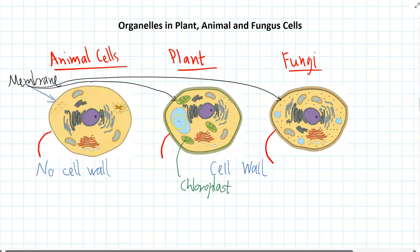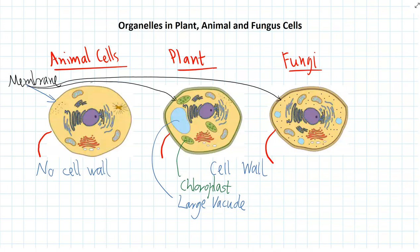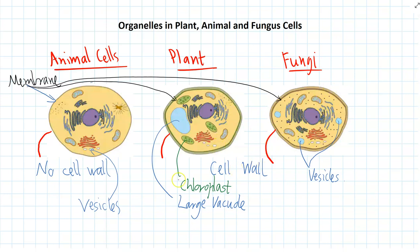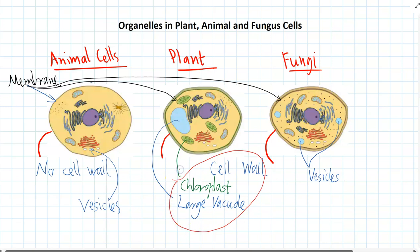Plants are also the ones that have a large vacuole, whereas animal cells have the smaller vesicles. Fungi have cell walls, and that's really their only difference compared to animals. Animals have the least number of organelles — we have the most boring cells.